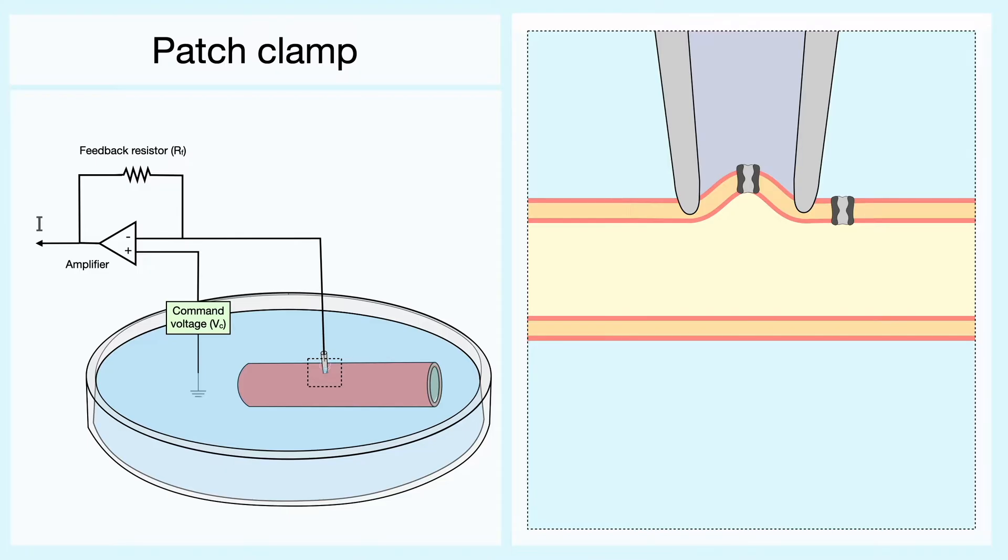As you can see, the patch clamp is essentially a voltage clamp setup, but instead of clamping the entire cell, the experimenter clamps a single patch of cell containing only a few channels.